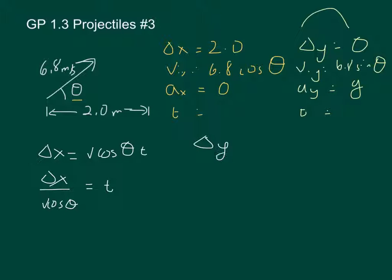In the vertical direction, this is going to be zero, and that's going to be v sine theta t plus g over 2 t squared. And because the delta y is zero, I can rearrange that: v sine theta t equals negative g over 2 t squared.